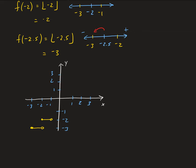The greatest integer of 0 is just 0. For values between 0 and 1, the greatest integer is 0, giving an open endpoint at 1. The greatest integer of 1 is 1, and for values between 1 and 2 the greatest integer is 1. This pattern continues, producing what the greatest integer function looks like — a staircase graph.